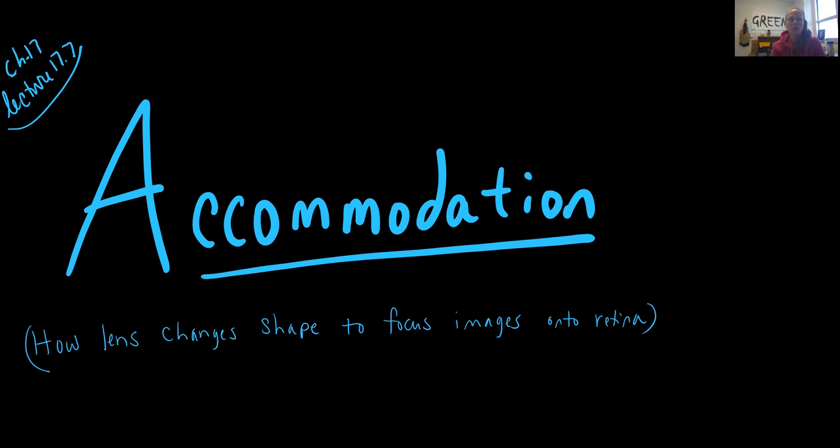So our topic for this video is accommodation. Accommodation is describing the changes in shape that happen to your lens in order to accommodate for looking at things far away or super up close.